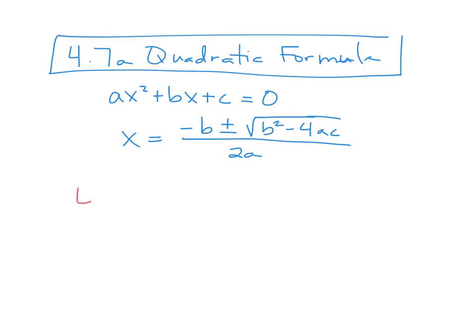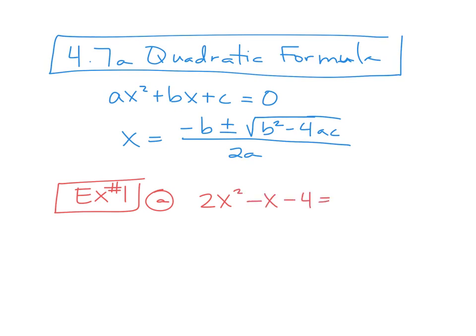What you're going to do with this is very basic — you're plugging it into a formula. First problem: let's say we have 2x squared minus x minus 4 equals zero. Some of you maybe like factoring better, and that's great, but sometimes you have to do the quadratic formula. When we tell you to use the quadratic formula, you must use it — even if it's factorable — because we need to know that you know it.